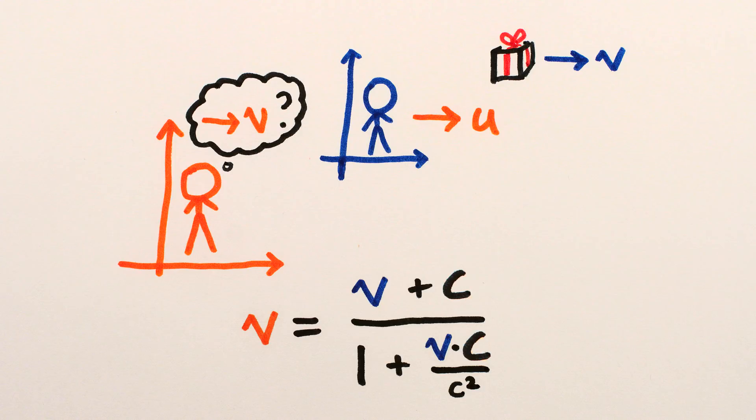You'll notice that if you put the speed of light in as one of the velocities, the equation always gives the speed of light back, no matter what the other velocity is, which of course jives with the whole constant speed of light thing.